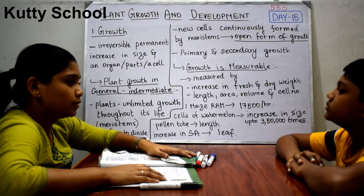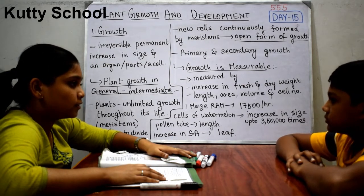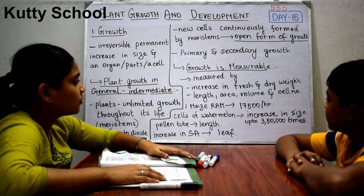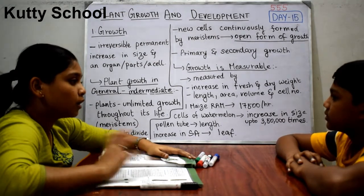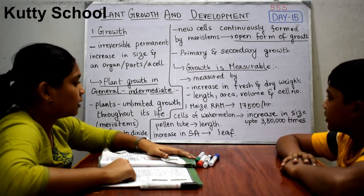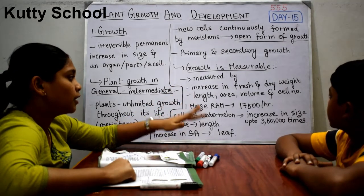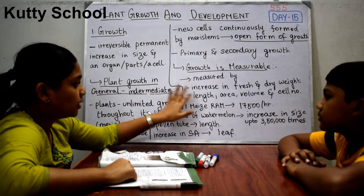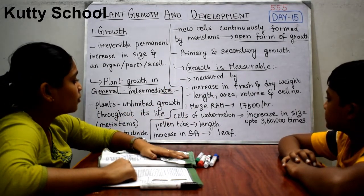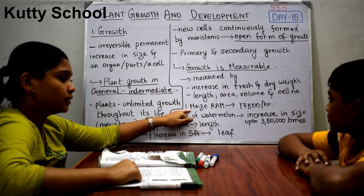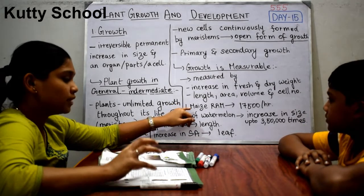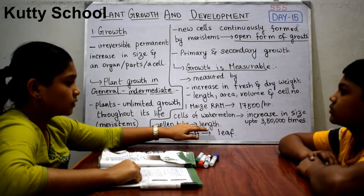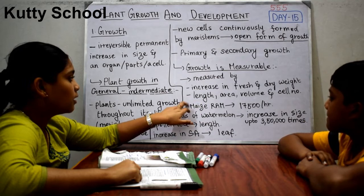Growth is measurable. We can measure the growth in plants. It is measured by increasing fresh weight and dry weight. Fresh weight is how much the plant weighs with its water content. Dry weight excludes water content. Growth is also measured by length, area, volume, and number of cells — for example, a maize root tip can produce up to 17,500 cells per hour.